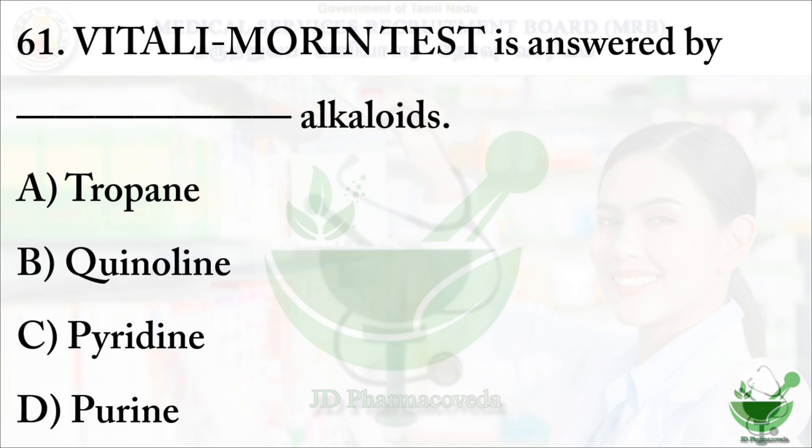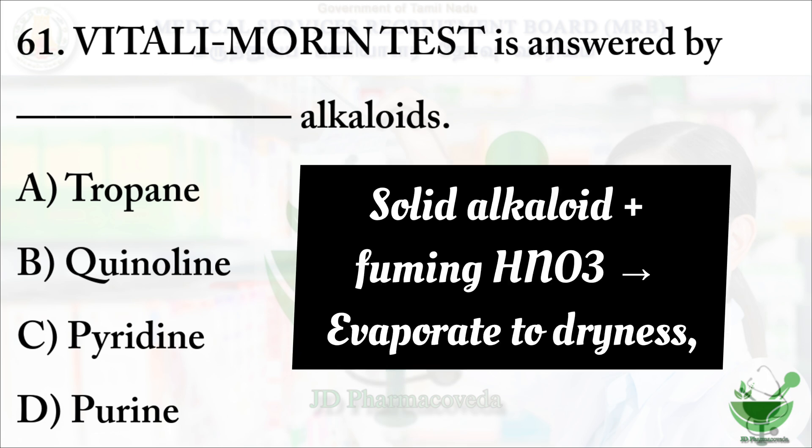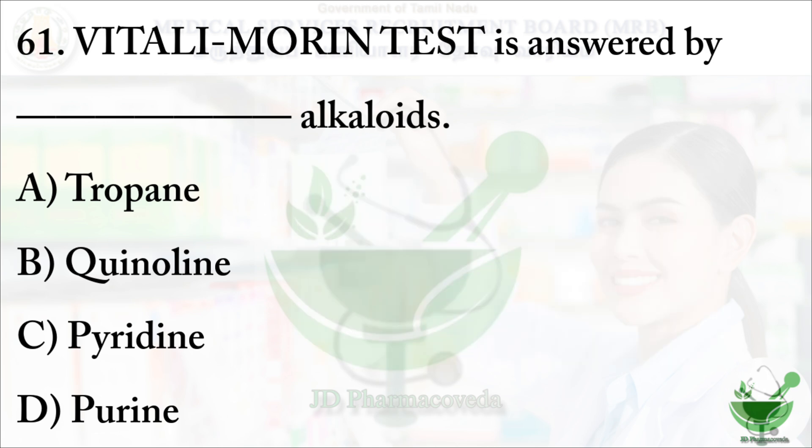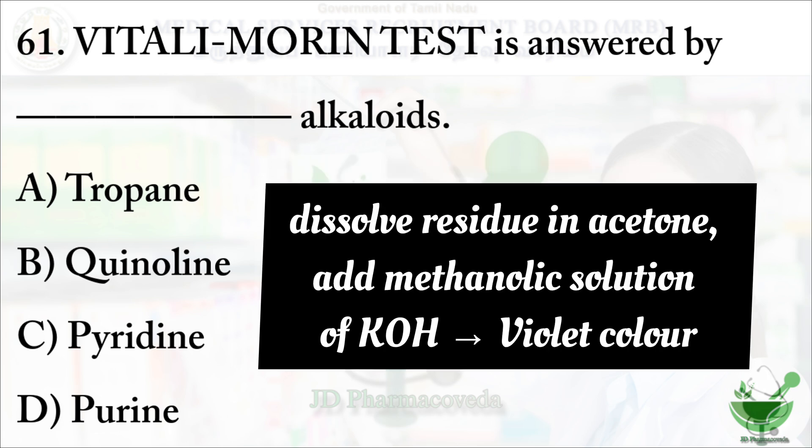Vitaly Morin test: adding solid alkaloid with fuming nitric acid, when evaporated to dryness and dissolved in acetone, then add methanolic solution of potassium hydroxide to give violet color. So, which of the following answers this Vitaly Morin test?